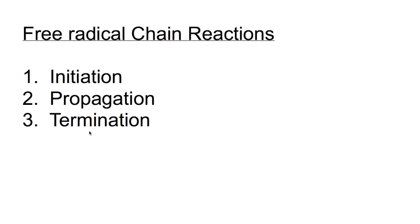Welcome to this video looking at free radical chain reactions. Free radical chain reactions involve three steps that are continually happening. The first step, initiation, produces a pair of free radicals by homolytically breaking a covalent bond. This means that one electron goes with each atom, forming a radical, which is a highly reactive species with an unpaired electron.